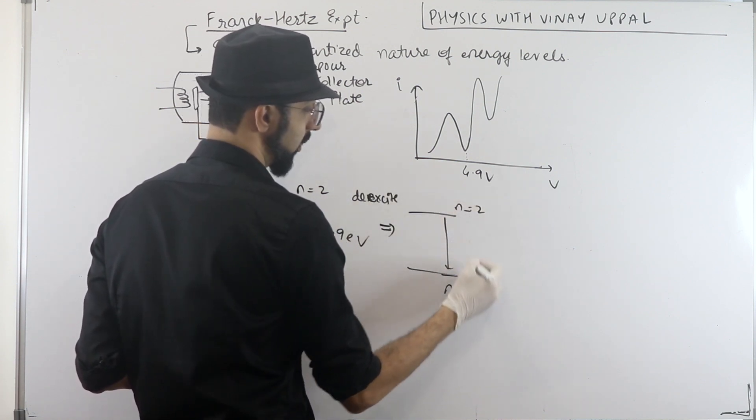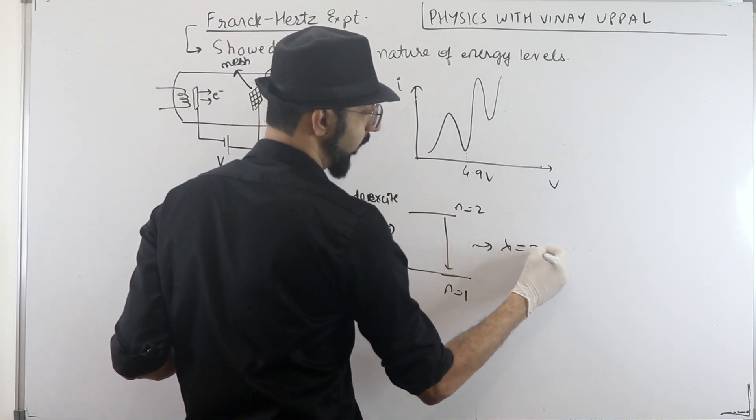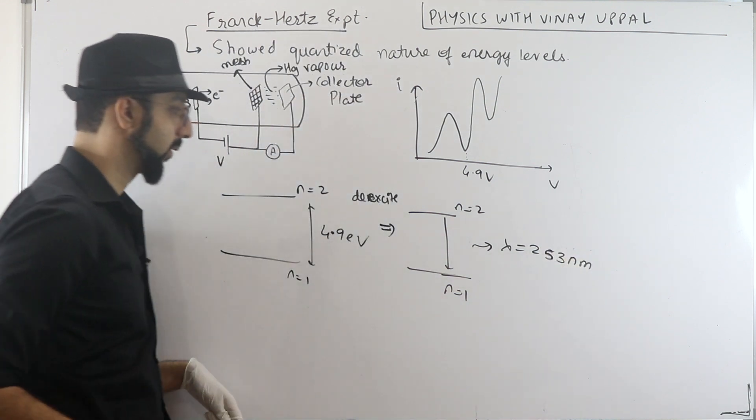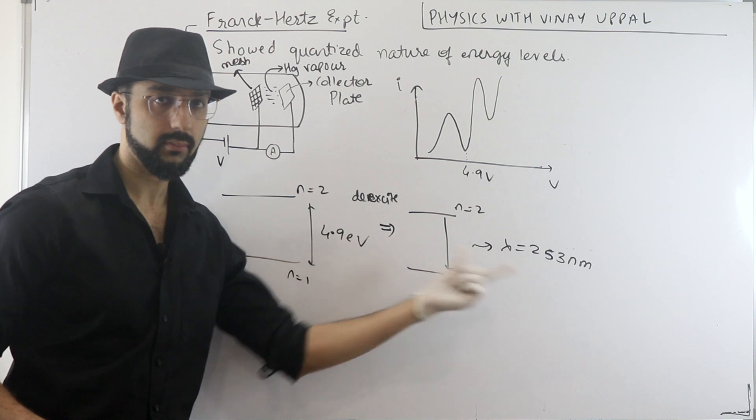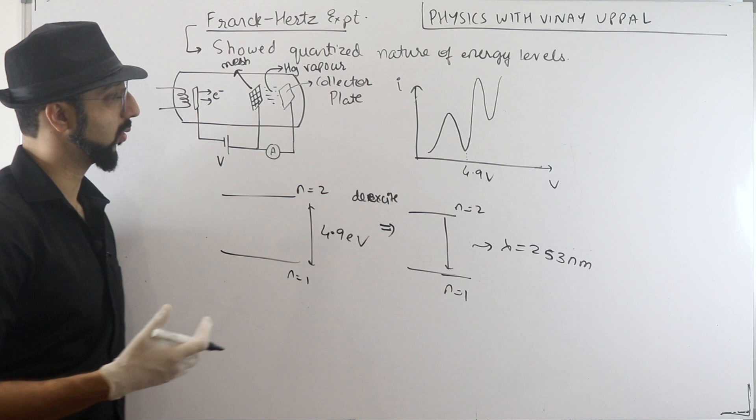And further it will excite the mercury atom so n equal to 2 to n equal to 1, and a photon will be emitted. So that wavelength corresponds to around 253 or 254 nanometers. You can check yourself, you can derive this.